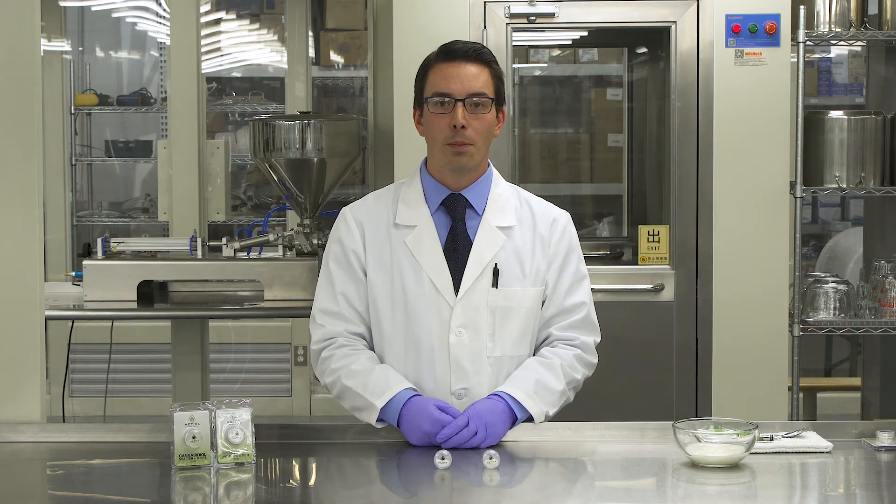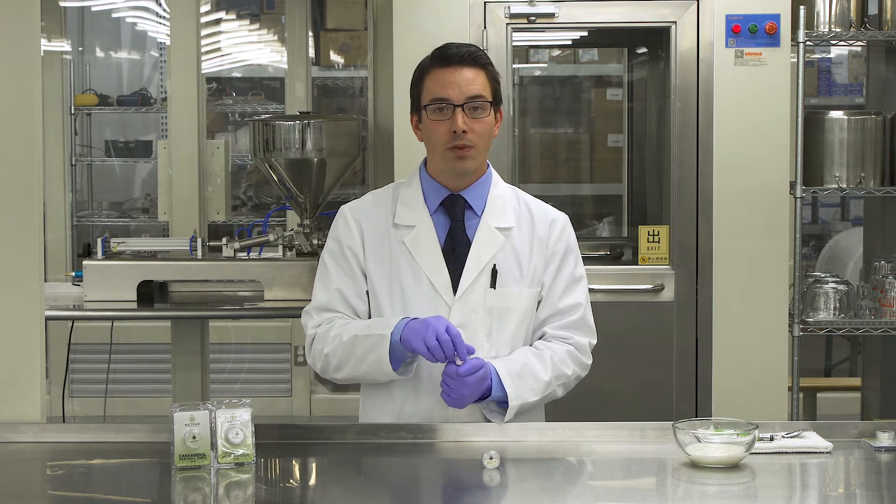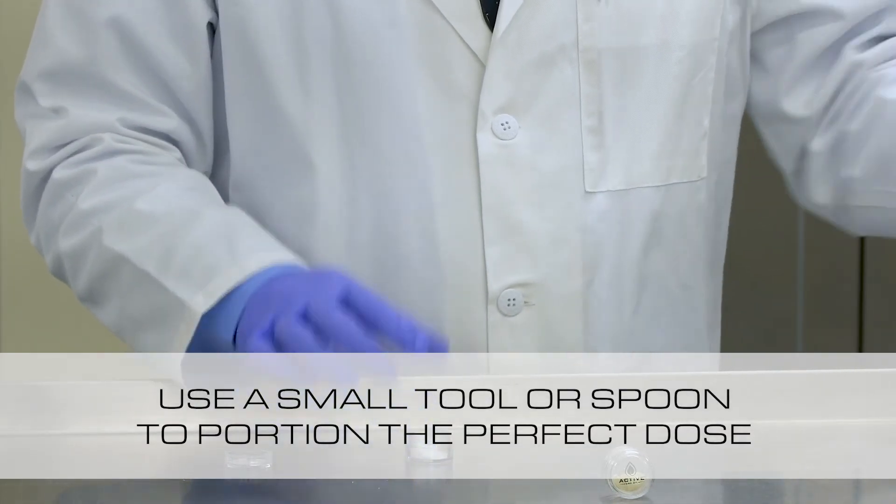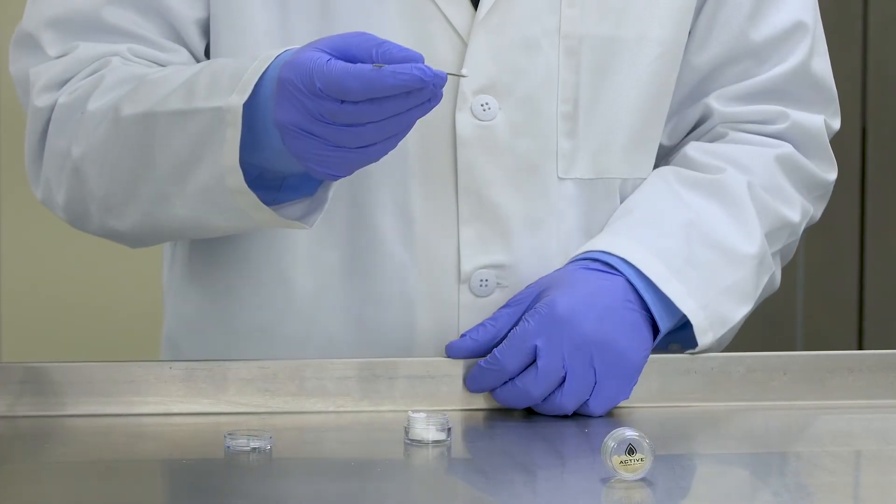To use the CBD isolate powder, simply remove it from its plastic clamshell packaging and unscrew the lid. Find yourself a small tool or spoon to pull out the perfect dose.